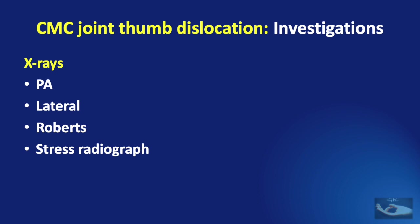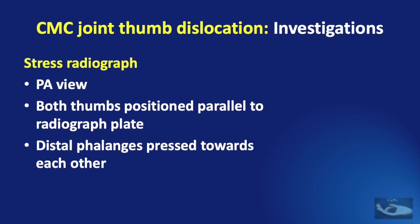The usual x-rays — the PA view, the lateral view, and sometimes the Roberts view — help in confirming the carpometacarpal joint dislocation of the thumb. Stress radiographs may delineate the dislocation or subluxation better. This is a PA view in which both thumbs are positioned parallel to the radiograph plate.